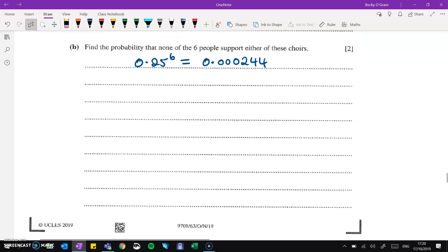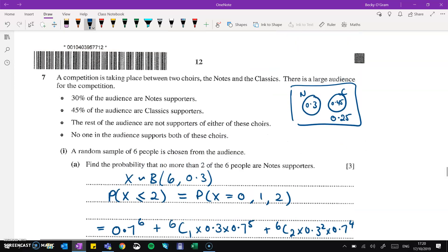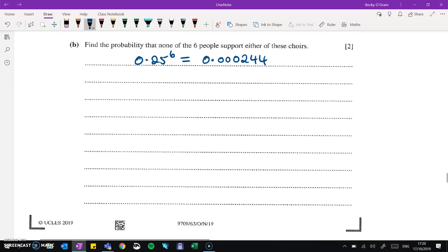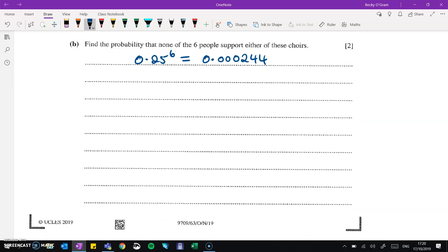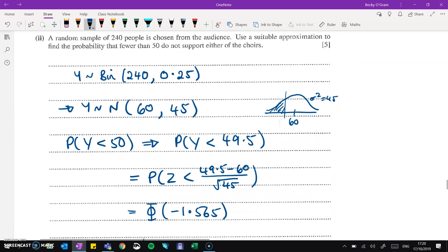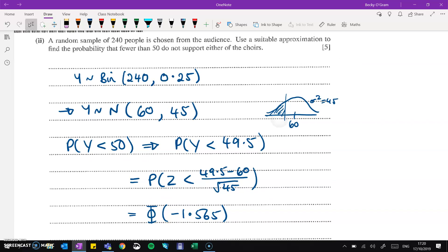Then find the probability that none of the six people support either of these choirs. That means that all six of them support neither of the two choirs. Now that was a 0.25. So the people in the audience that don't support either of them, the chance of that was 0.25, and that would happen six times over. So that's to the power of six.